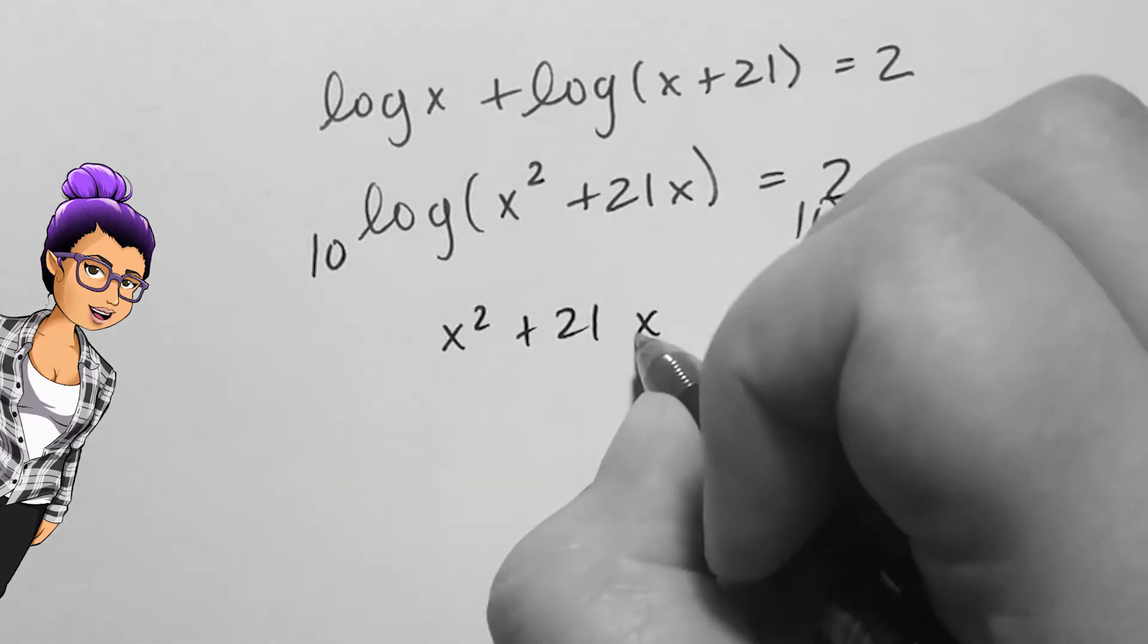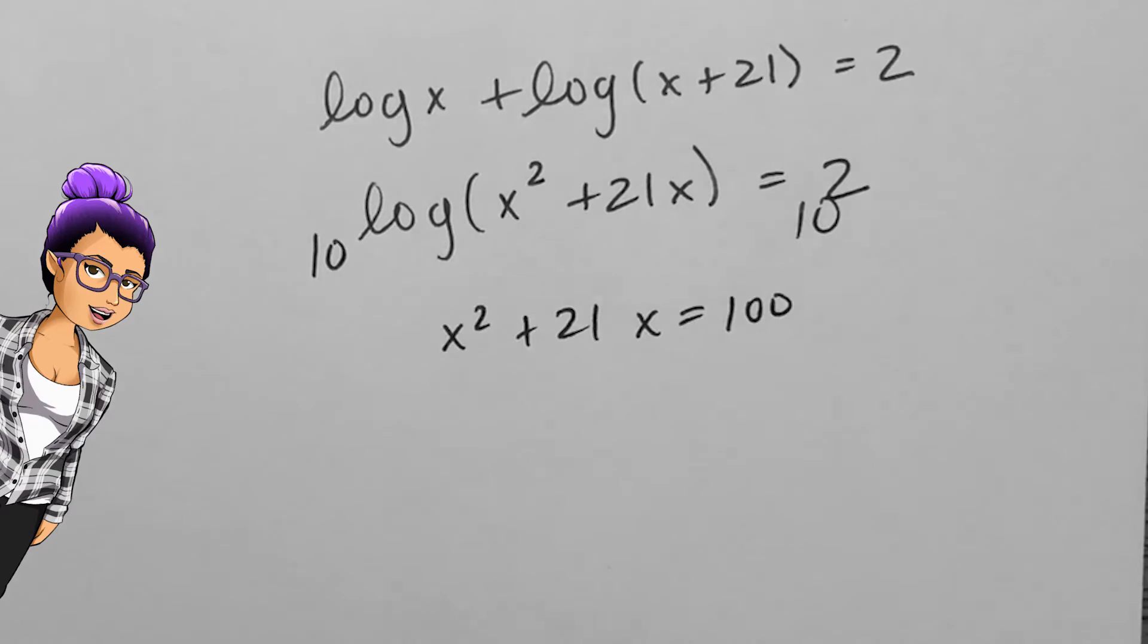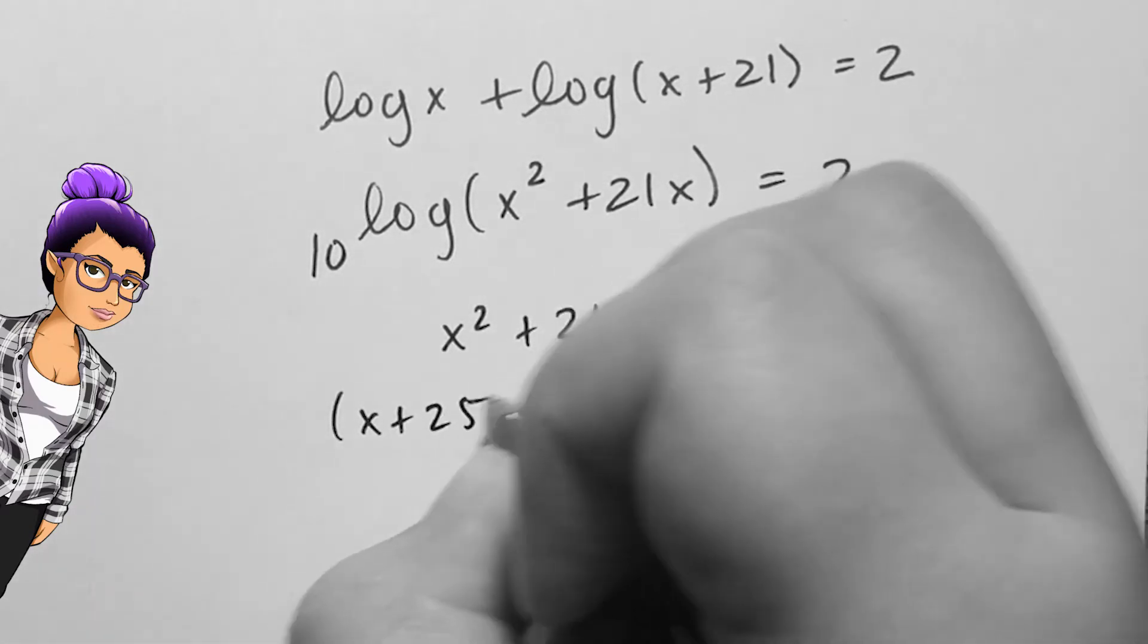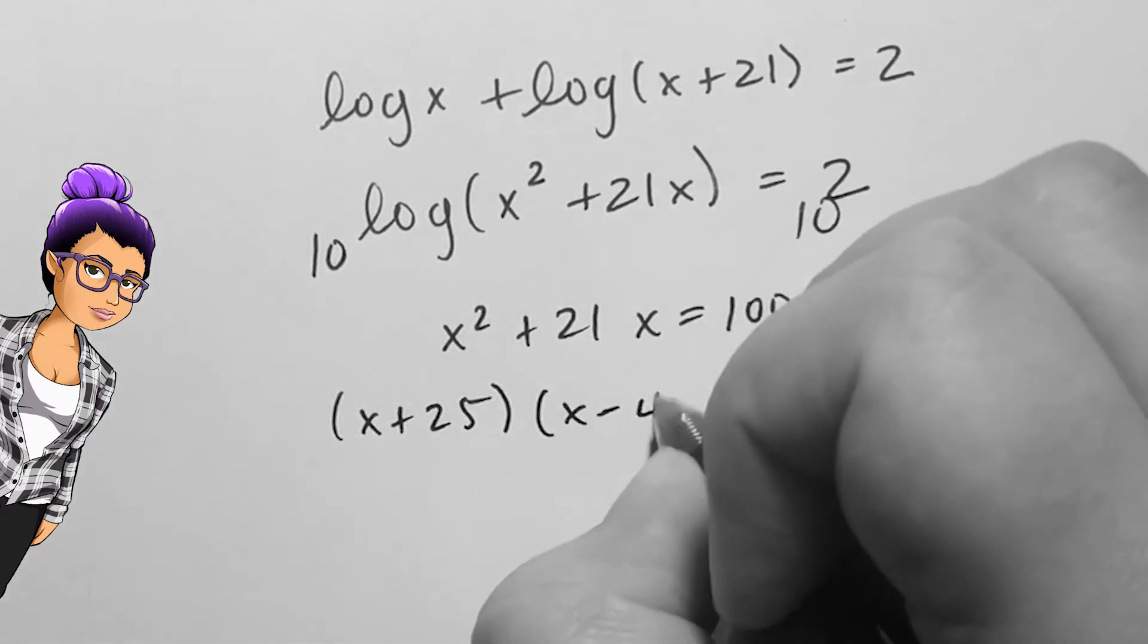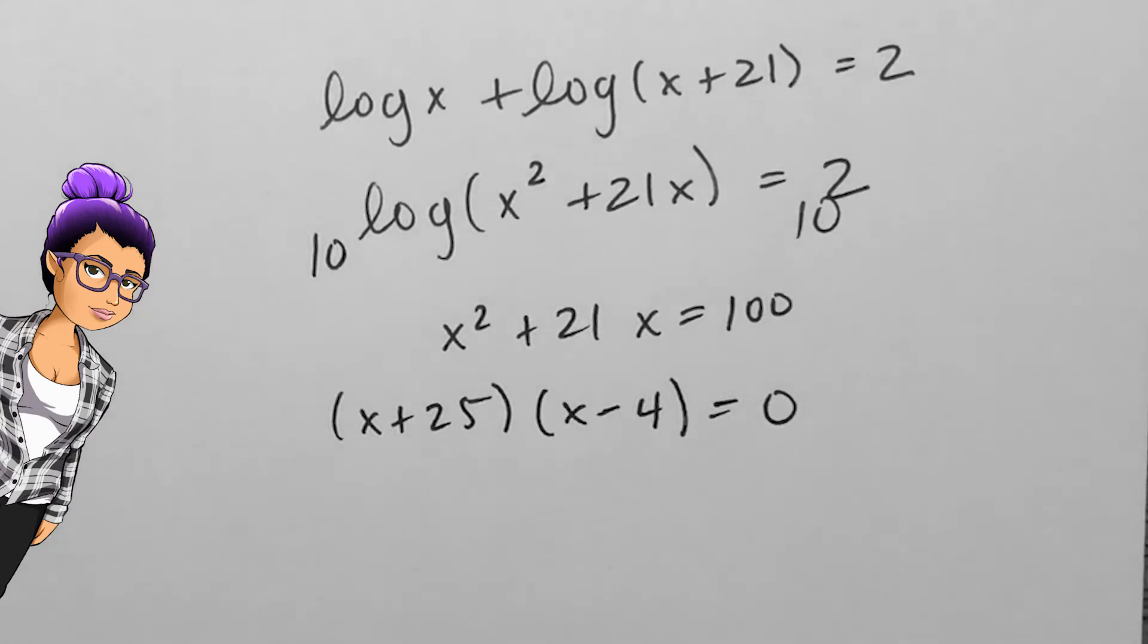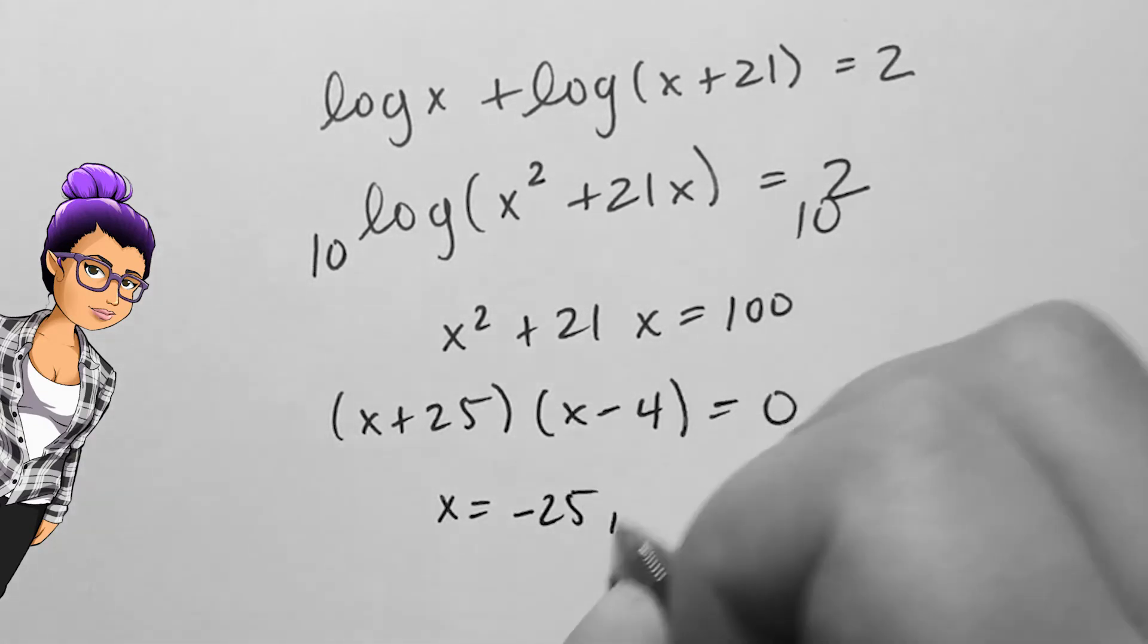When I use 10 as a base of an exponent, I get x squared plus 21x equals 100. I now have a quadratic equation that I can solve by either factoring or the quadratic formula to get that x equals negative 25 and 4.